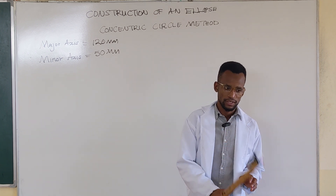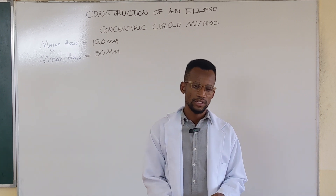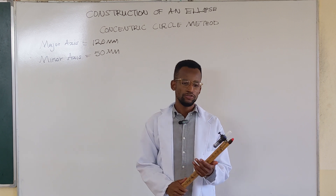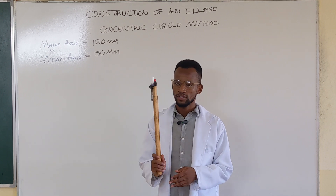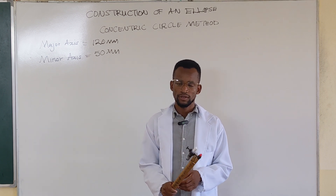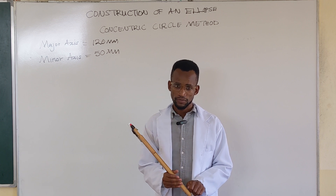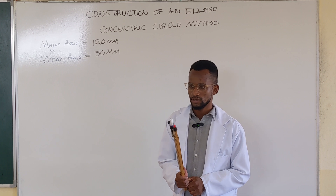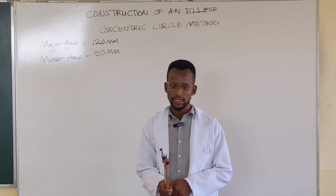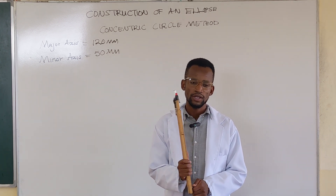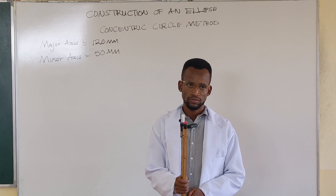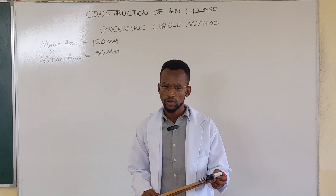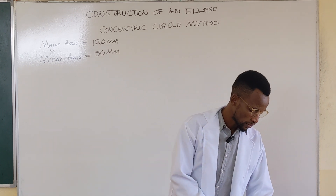It is worth noting that before you start drawing any circle — a circle is a symmetrical object — you start with center lines. You start with two center lines that meet at 90 degrees so that you identify the center point of those circles, which should also be the geometric center of your ellipse.